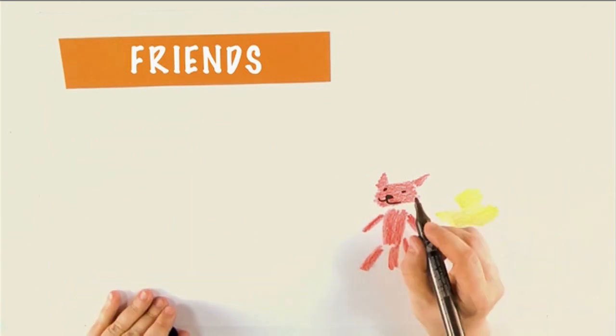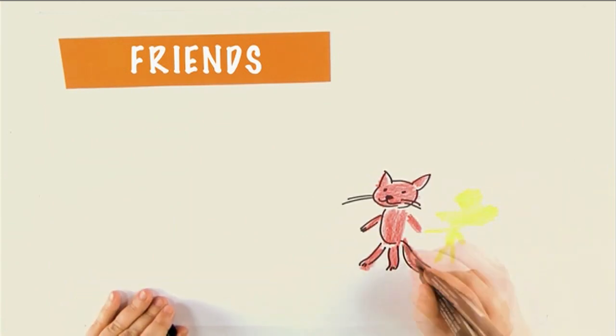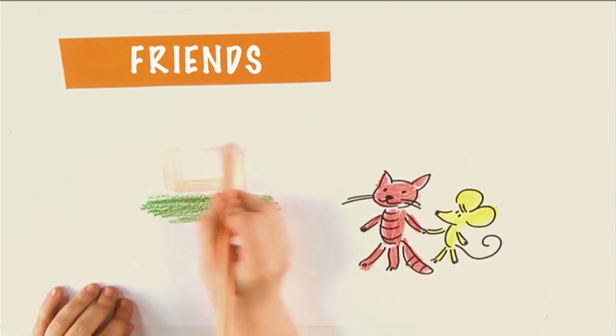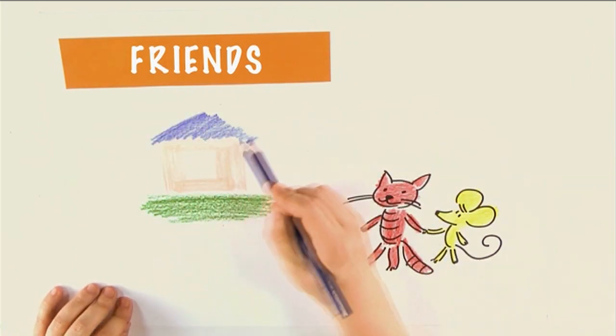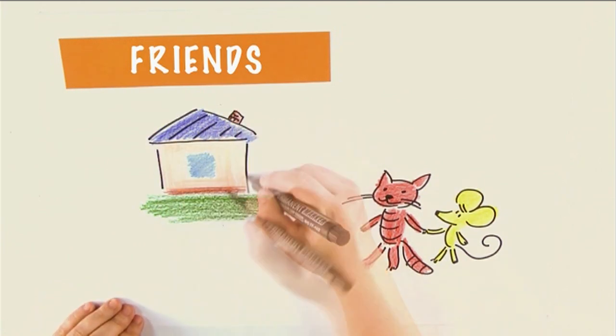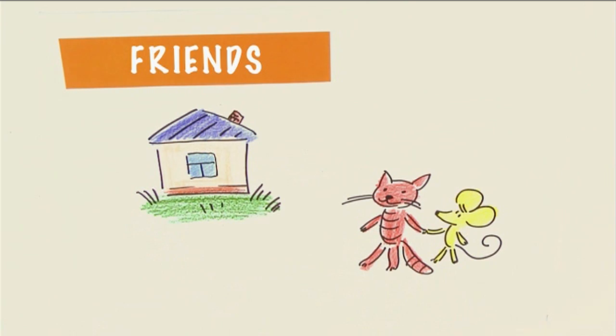Котенок и мышонок — друзья. Let's go to my place, said kitten. Пойдем ко мне в гости, сказал котенок. My owner is out. Хозяйки нет дома. Let's, said little mouse gaily. Пойдем, обрадовался мышонок.